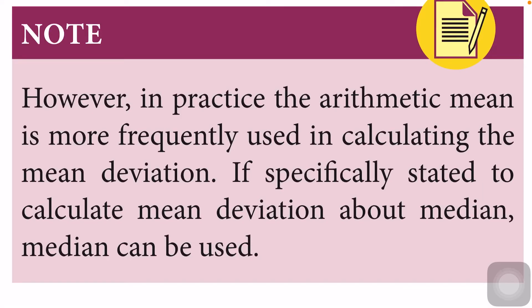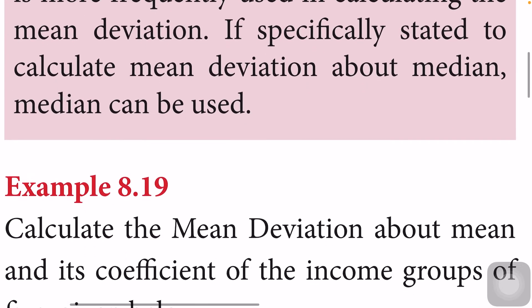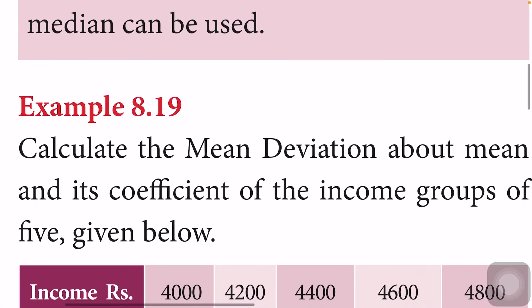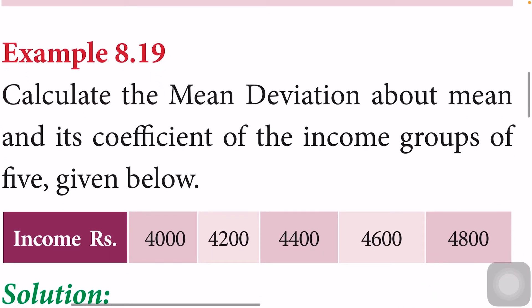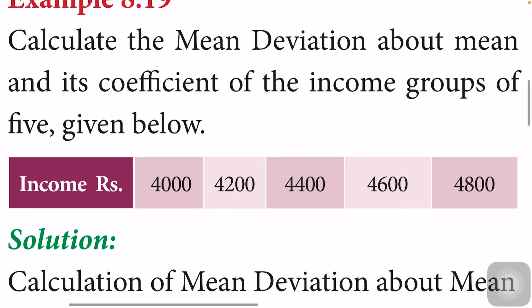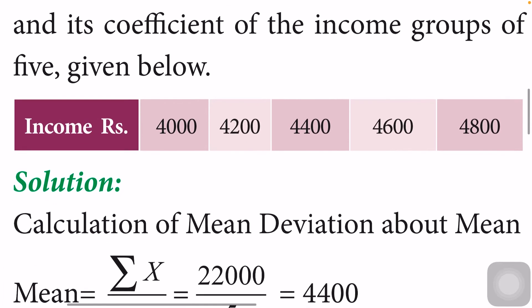Mostly we use arithmetic mean to calculate the mean deviation, so if the question does not specify, you can use the mean. First example — example 19: calculate the mean deviation about mean and its coefficient for the income groups of 5 given below. Five incomes are given here and we have to calculate the mean deviation.